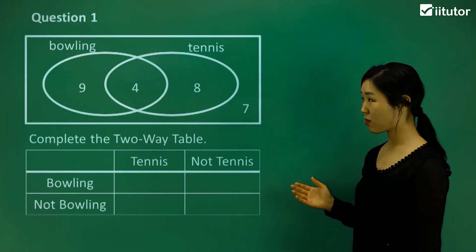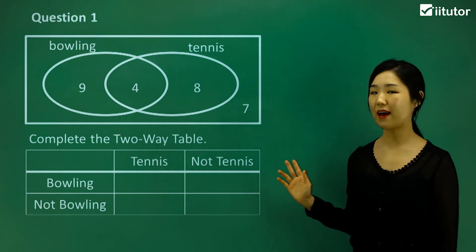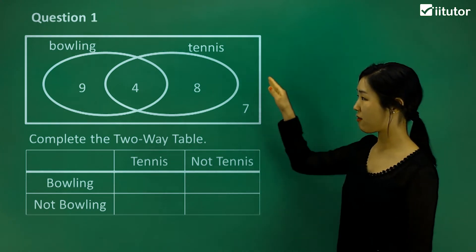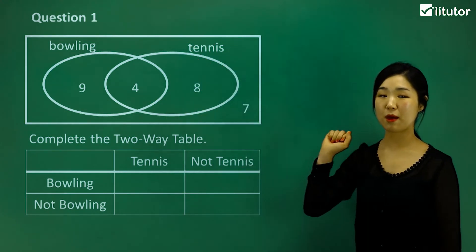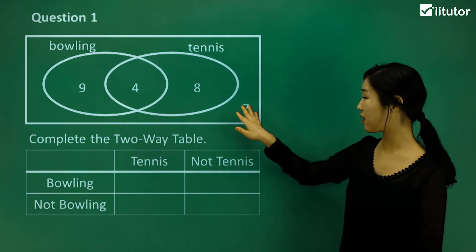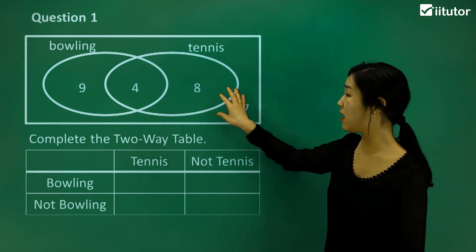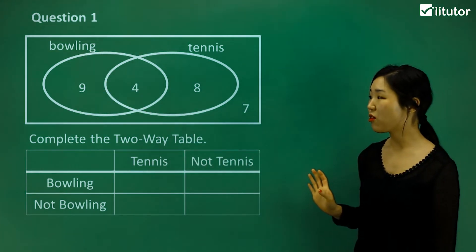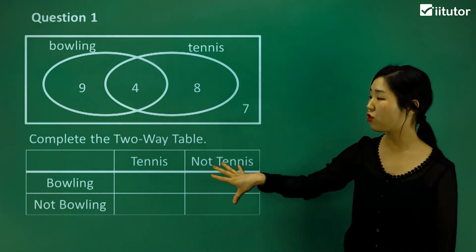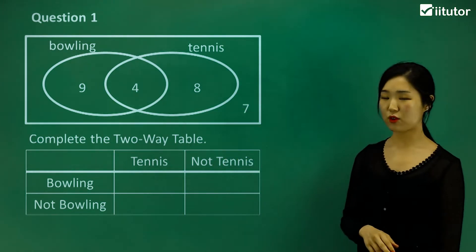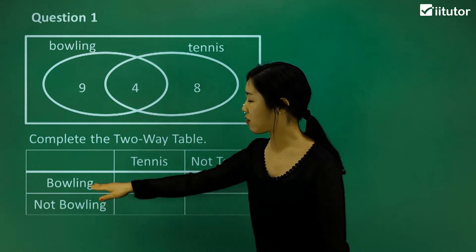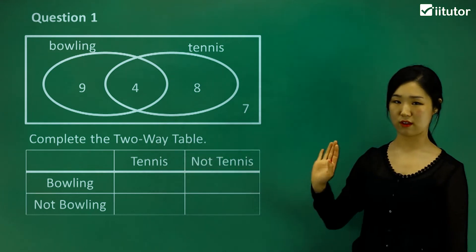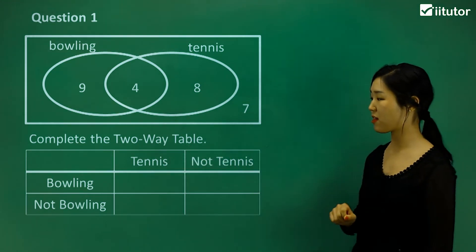Starting with question one, it gives us a Venn diagram that's all filled out. It's got our bowling circle and our tennis circle. Remember, our Venn diagram is always covered with a box, with stuff outside the circles and all the inside of the circles filled out as well. I'm going to transfer this information onto our two-way table, which has bowling and not bowling as one category, and tennis or not tennis as the other.